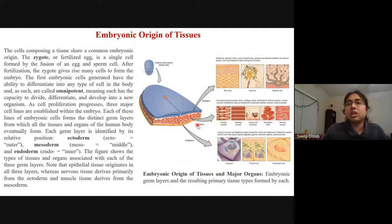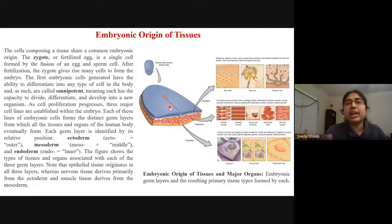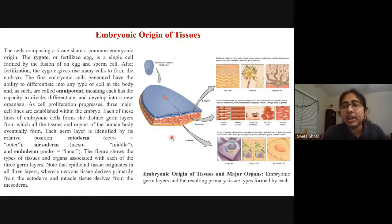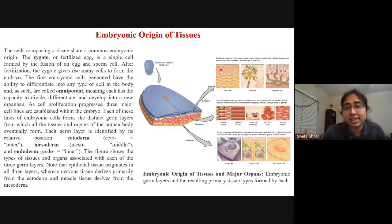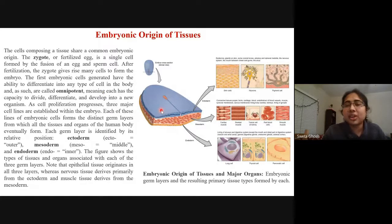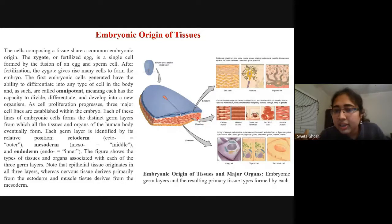The origin of tissues comes from an embryonic origin — a zygote or fertilized egg. When an egg and sperm are fertilized, the zygote forms, and the embryo cross-section reveals three different layers: endoderm, mesoderm, and ectoderm. These embryonic cells are omnipotent — they can generate any type of cell in the body.